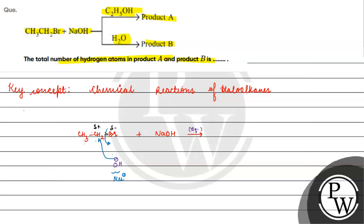Bromide ion, being a good leaving group, will leave. It will result in the formation of ethanol. So product B will be ethanol. How many hydrogens? The number of hydrogens is 6.